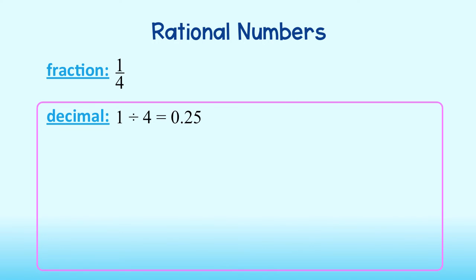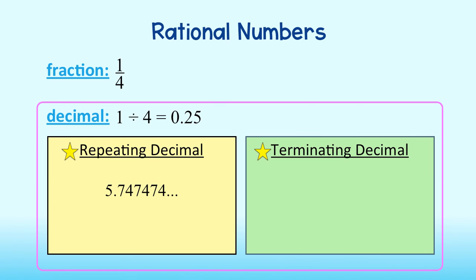For rational numbers, each decimal will either be a repeating decimal or a terminating decimal.